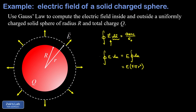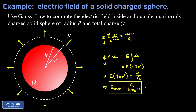Gauss's Law says that electric flux integral equals the enclosed charge divided by ε₀. So E times 4πr² equals Q divided by ε₀. Dividing both sides by 4πr², we get E_out = Q / (4πε₀r²). This is a notable result: the electric field outside a uniformly charged sphere is indistinguishable from the field of a point charge Q located at the center of the sphere.